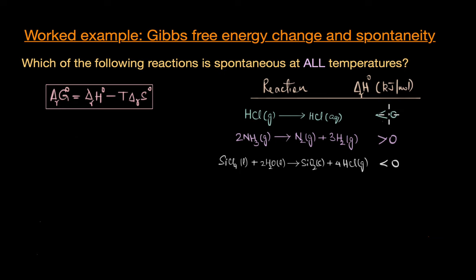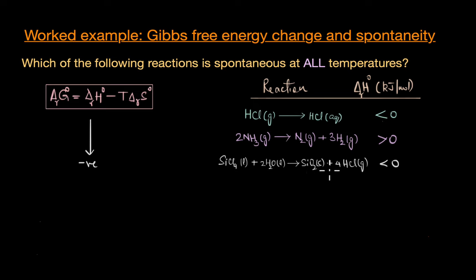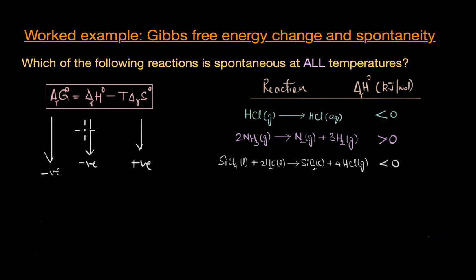The last reaction has a negative ΔH° value. To determine the sign of ΔS°, we look at the number of moles of gaseous products versus gaseous reactants. The reactant side has no gaseous components, while the product side has four moles of gaseous HCl. Since gases have much more positive entropy than liquids and solids, ΔS° is positive. With negative ΔH° and positive ΔS°, the ΔG° is negative at all temperatures, making this reaction spontaneous at all temperatures.